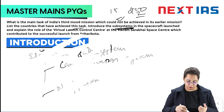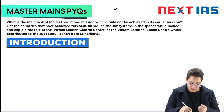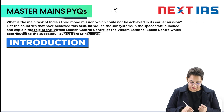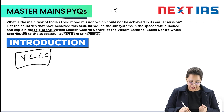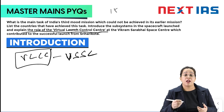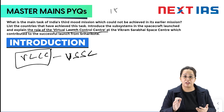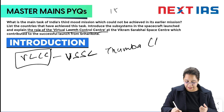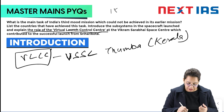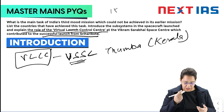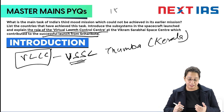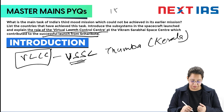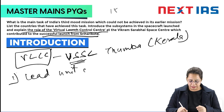The fourth part of the question asks to explain the role of the Virtual Launch Control Center (VLCC) at Vikram Sarabhai Space Center. The Chandrayaan 3 mission was launched from Satish Dhawan Space Center at Sriharikota in Andhra Pradesh, while Vikram Sarabhai Space Center is located at Thumba in Kerala. We need to understand how these two are related and how the VLCC contributed to the successful launch.